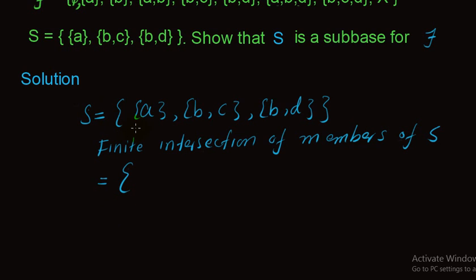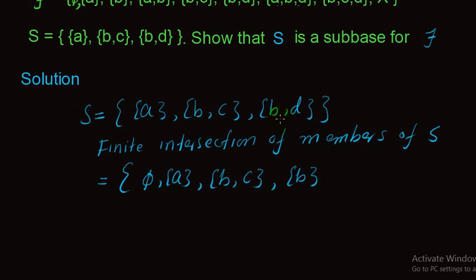Now we find the finite intersections of members of S. Intersection of {a} with {b,c} gives phi. Intersection of {a} with {a} gives {a} itself. Intersection of {a} with {b,d} gives phi. Intersection of {b,c} with {b,c} gives {b,c}. Intersection of {b,c} with {b,d} gives singleton set {b}. Intersection of {b,d} with {b,d} gives {b,d}. Intersection of {b,d} with other sets gives {b} and phi.